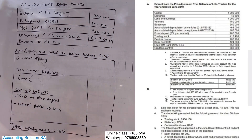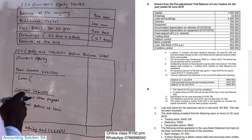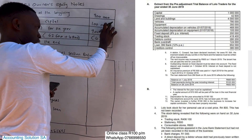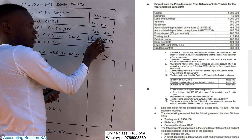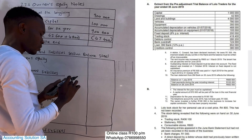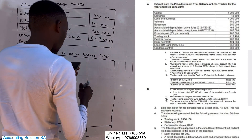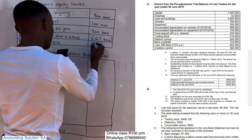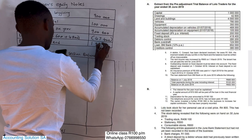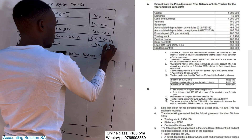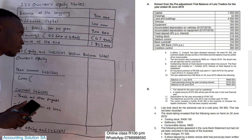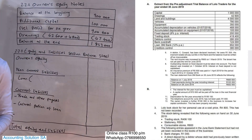Now let's calculate the balance at the end. It's very simple: 900,000 plus 100,000 plus 900,400 minus 47,400, which gives us a closing balance of 1,853,000. We are now done with this part.